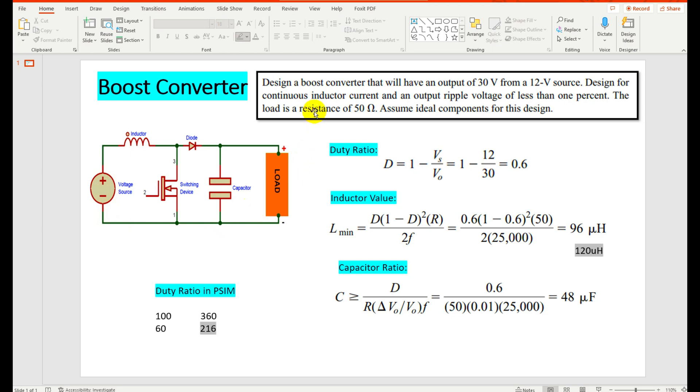The design problem is to create a converter with an input voltage of 12 volts and output voltage of 30 volts. This will step up the 12 volt supply to 30 volts, with ripple in voltage and current less than 1%, and the load is 50 ohms.